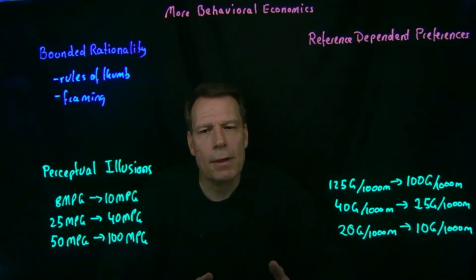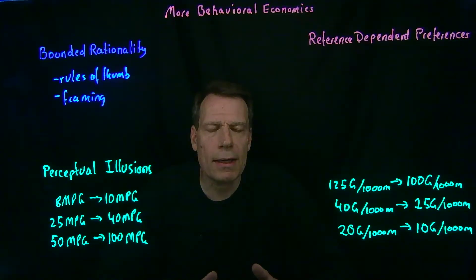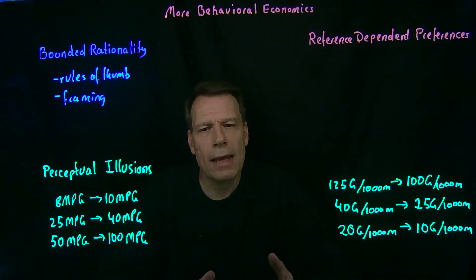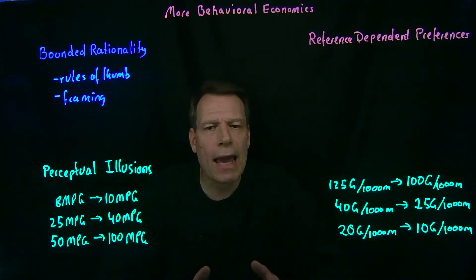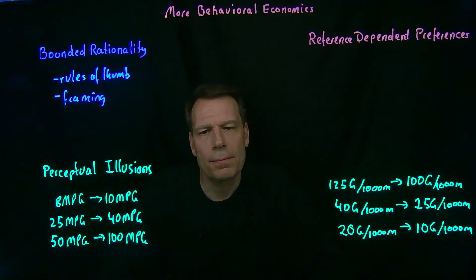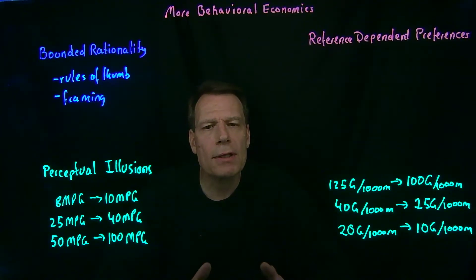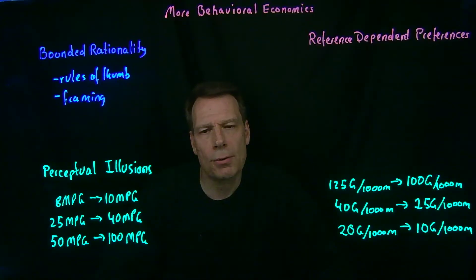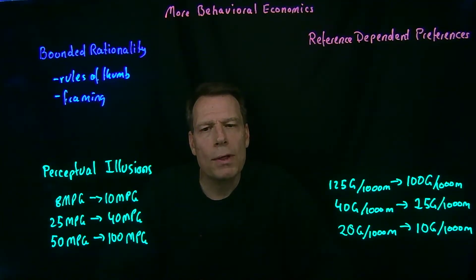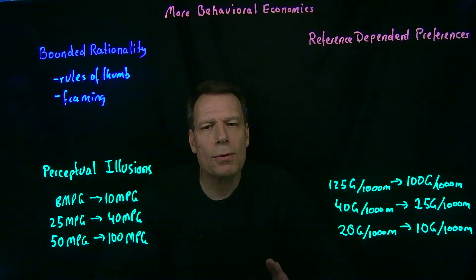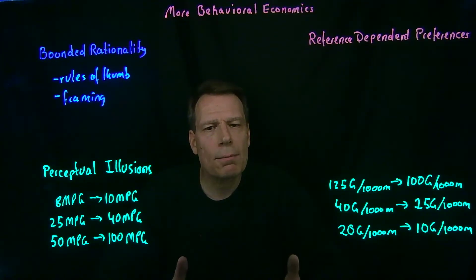Perceptual illusions happen when information is framed in a way that creates an illusion about what that information means, when it actually means something different. Let me give you an example from two Duke professors, Richard Larrick and Jack Stoll. They went out and asked people which car on the road they would replace if they wanted to reduce the amount of gasoline used, giving them three options.